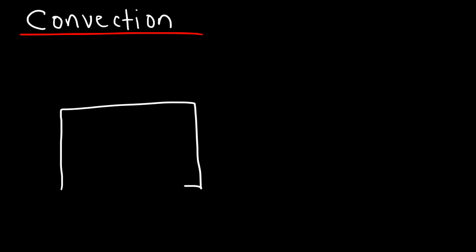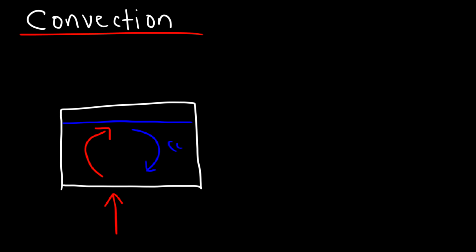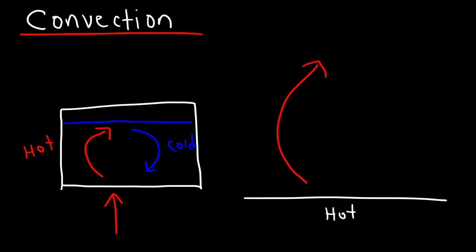If we have a beaker of water and add heat, the water molecules at the bottom get heated and rise to the top. As they rise, they cool down, and the cooler water molecules descend. The same is true in air: on a hot day, warm air rises from the hot ground and cools as it goes up, while cold air descends. Warm air rises because it is less dense — heating a gas causes molecules to expand, reducing mass per unit volume, so density decreases.